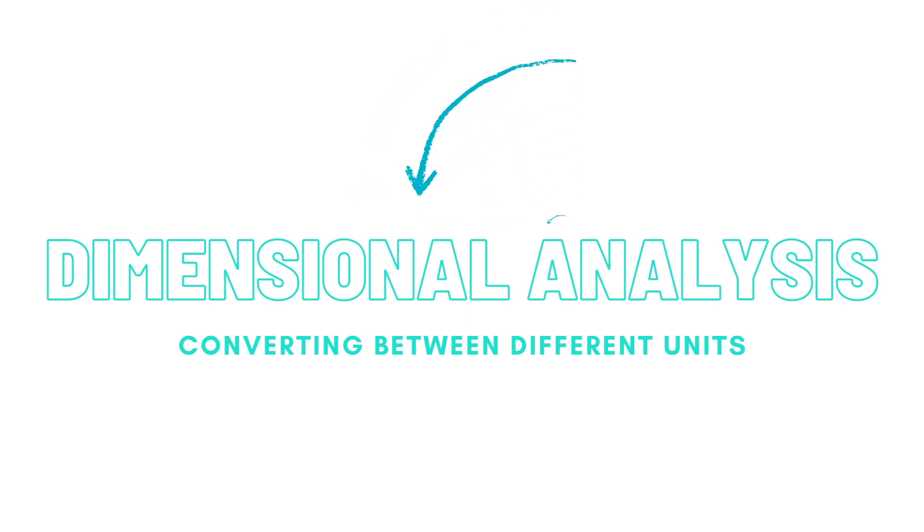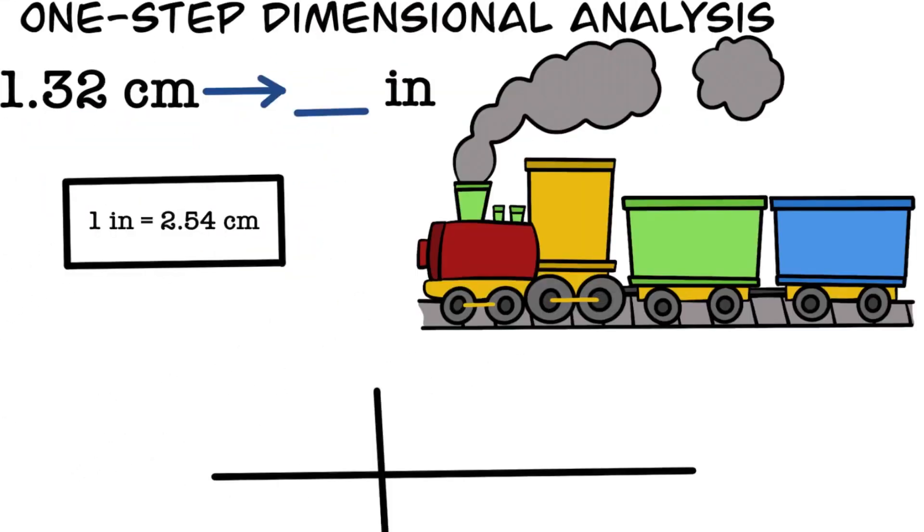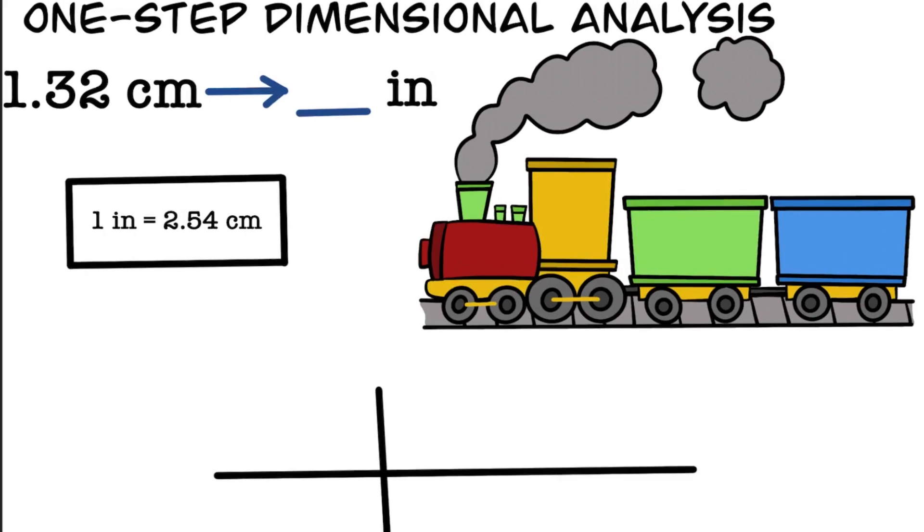The method that I like to use is the train track method. Let's start with the example of converting 1.32 centimeters to inches. When we do dimensional analysis problems we use the following steps: First, we circle the quantity that we're given, so we will start with 1.32 centimeters. Second, we circle the unit that we want to get to at the end. In this case that is in inches.